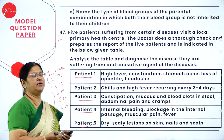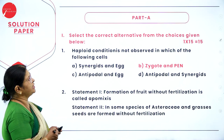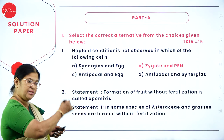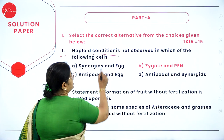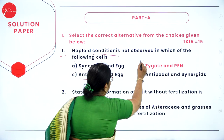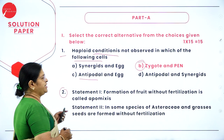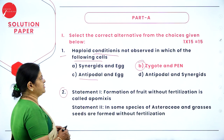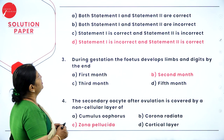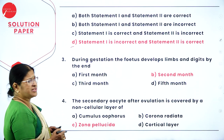Going for solutions. Part A first main — MCQs. Question 1: haploid condition is not observed in which cells? The answer is B — zygote and PEN (primary endosperm nucleus), as both are diploid and triploid respectively. Question 2: Statement 1 — formation of fruit without fertilization is called apomixis; Statement 2 — in some species of Asteraceae grasses seeds are formed without fertilization. Option D is correct — Statement 1 is incorrect and Statement 2 is correct.